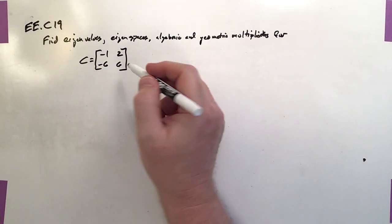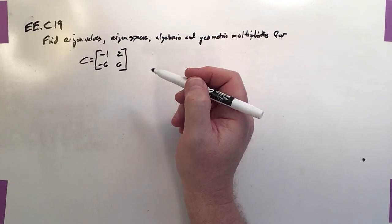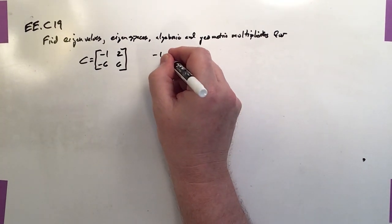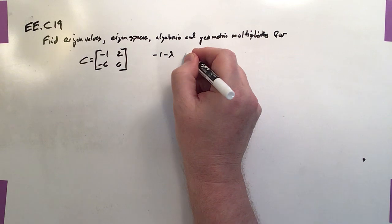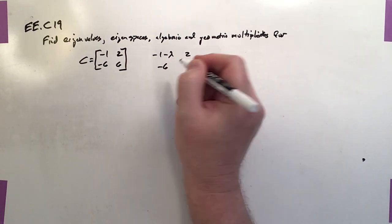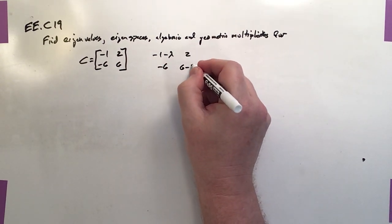Okay, so first thing to do is to find the characteristic polynomial and solve it. So it's going to be negative 1 minus lambda, 2, negative 6, and 6 minus lambda.